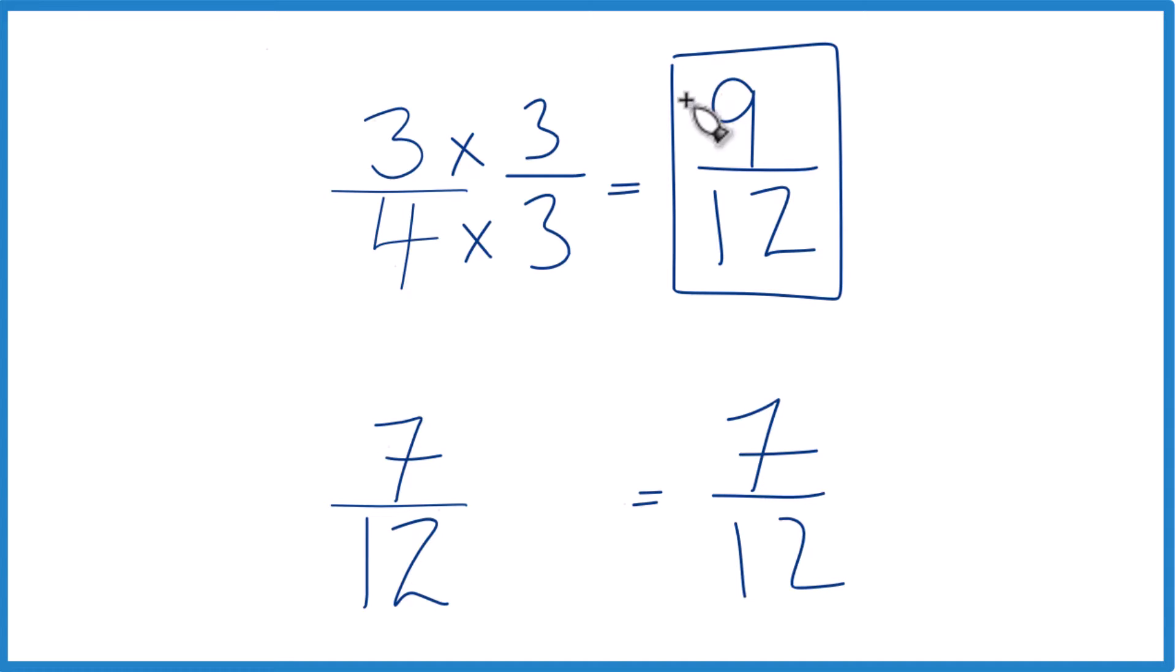And these are equivalent, which means 3 fourths, that's also greater than 7 twelfths.